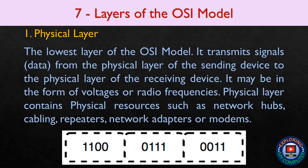The Physical Layer is the lowest layer of the OSI model. It transmits signals and data from the physical layer of the sending device to the physical layer of the receiving device.